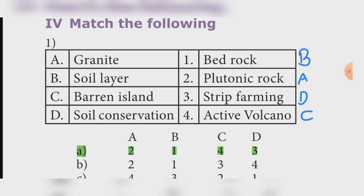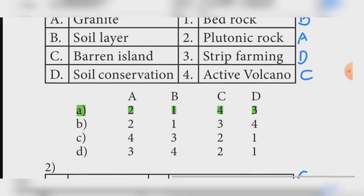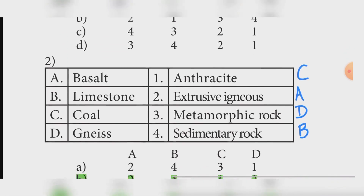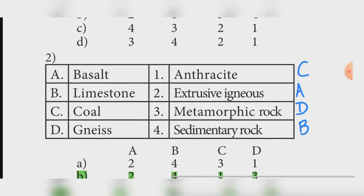Barren Island matching answer: Option A — 2, 1, 4, 3 is also correct. Second set: Basalt — Extrusive igneous. Limestone — Sedimentary rock. Coal — Anthracite.